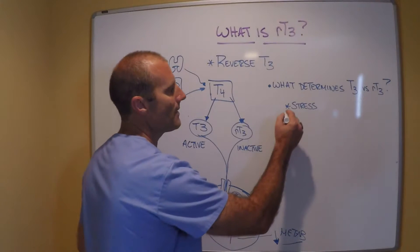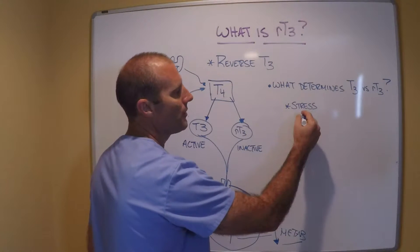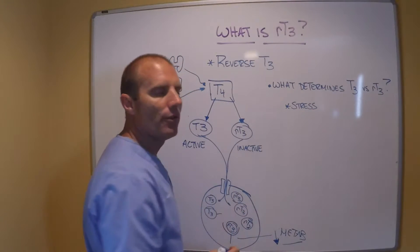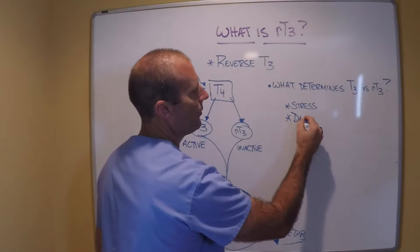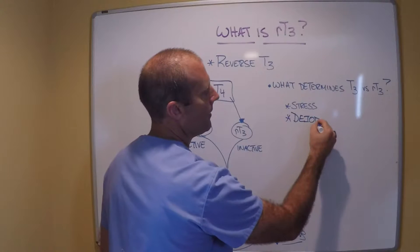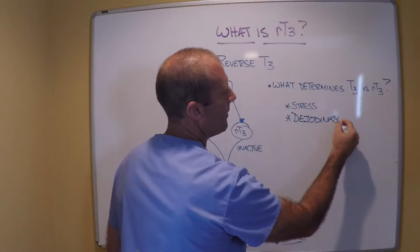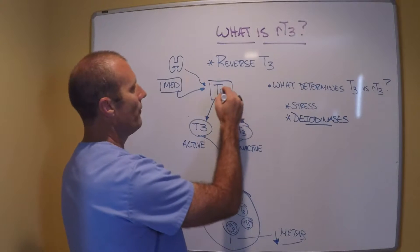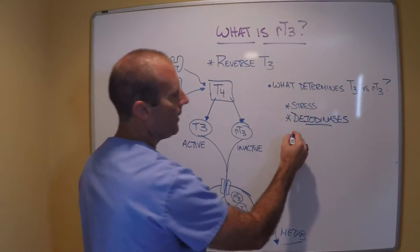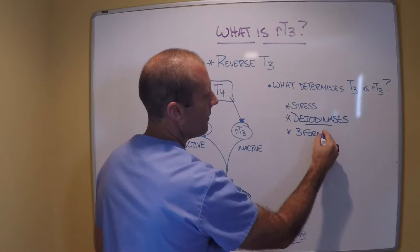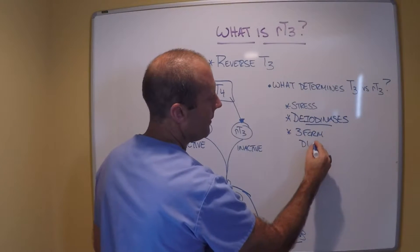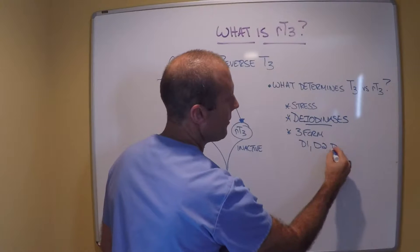That stress in the body really determines what happens at the cellular level. In previous videos I talked about these things called diodenases. And it's the diodenases that convert T4 to T3. And there's three forms of these guys. There's D1, D2, and D3.